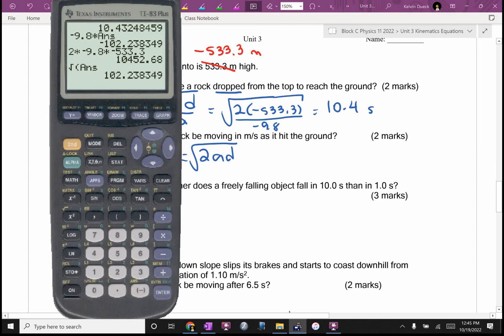If you were being a good test writer, you really should have gone VF squared equals 2AD. What happened to the VI squared? It's zero. Cross out the squared, square root. You would have gone 2 times negative 9.8 times negative 533.3, square root of that. The only issue is you'll have to insert the negative. I'm telling you now, there's going to be one question on your test tomorrow where you'll have to use that equation and add the negative.